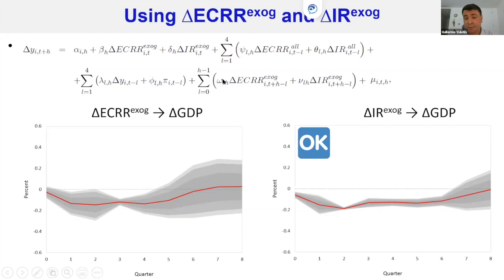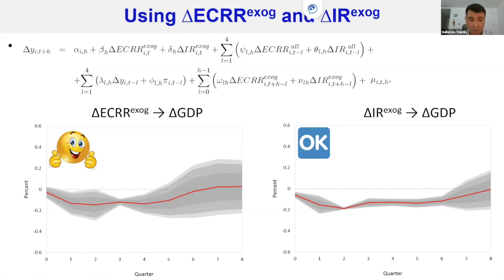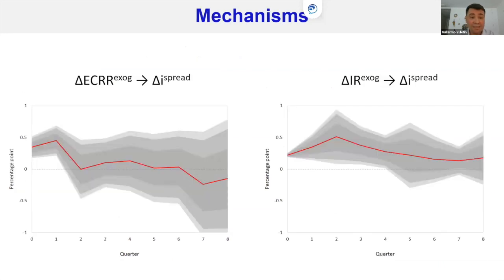What we find: on the interest rate side, properly identifying interest rate shocks does not change much — results remain broadly procyclical. But there is a big change on the reserve requirement side. Changes classified as exogenous through the narrative approach show a negative impact on GDP — exactly what one would expect from theory: increases in reserve requirements reduce economic activity. To understand the mechanism, both increases in interest rates and increases in reserve requirements increase the interest rate spread, confirming that the main channel runs through the credit system.